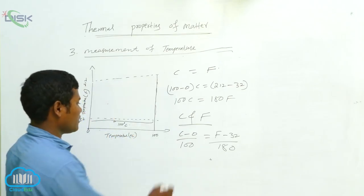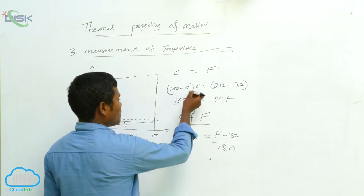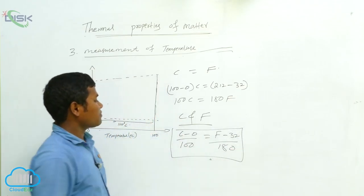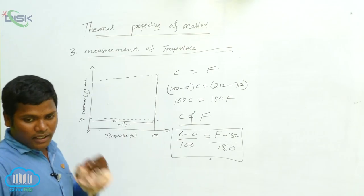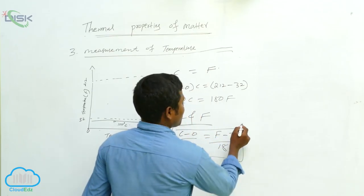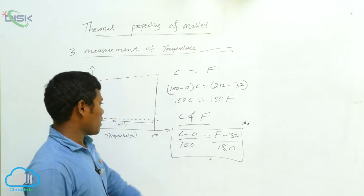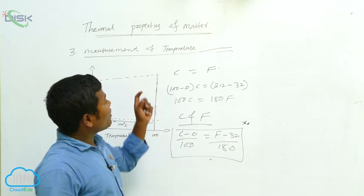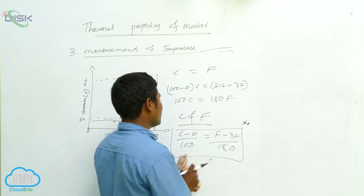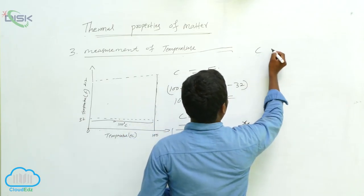The relation between Celsius and Fahrenheit is: (C - 0) / 100 = (F - 32) / 180. Here C is degree Centigrade and F is Fahrenheit. This is the relation between Celsius and Fahrenheit — remember this, as you will get questions based on this in any entrance exam.